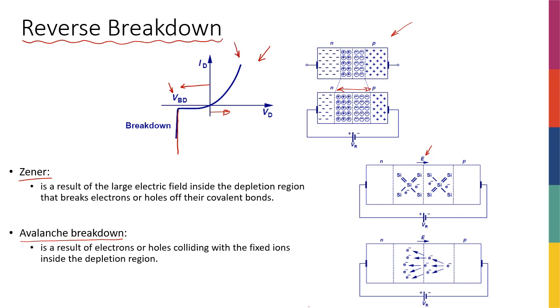When you have a forward bias, if this is the diode and you have a forward bias, your current is in this direction. But then when a breakdown happens, you have a current in this direction.